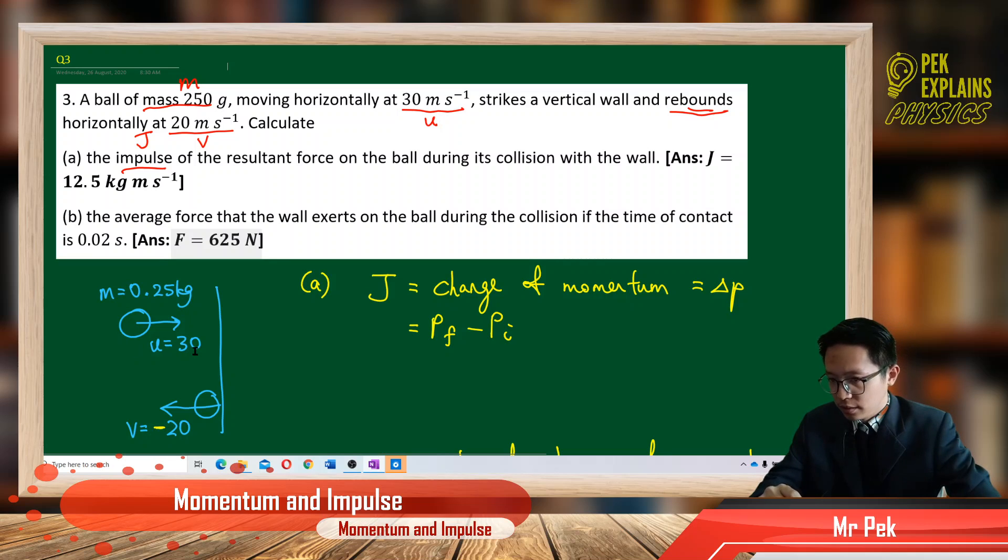So actually I have illustrated this situation in the diagram. So it's a ball. I convert the gram into kilogram, 0.25 kilogram. Initial velocity 30. And see, after strike the wall, the ball rebound. Rebound means it goes to the opposite direction. Remember, when it goes to the opposite direction, we need to put a negative sign. Many students forget about this negative sign.